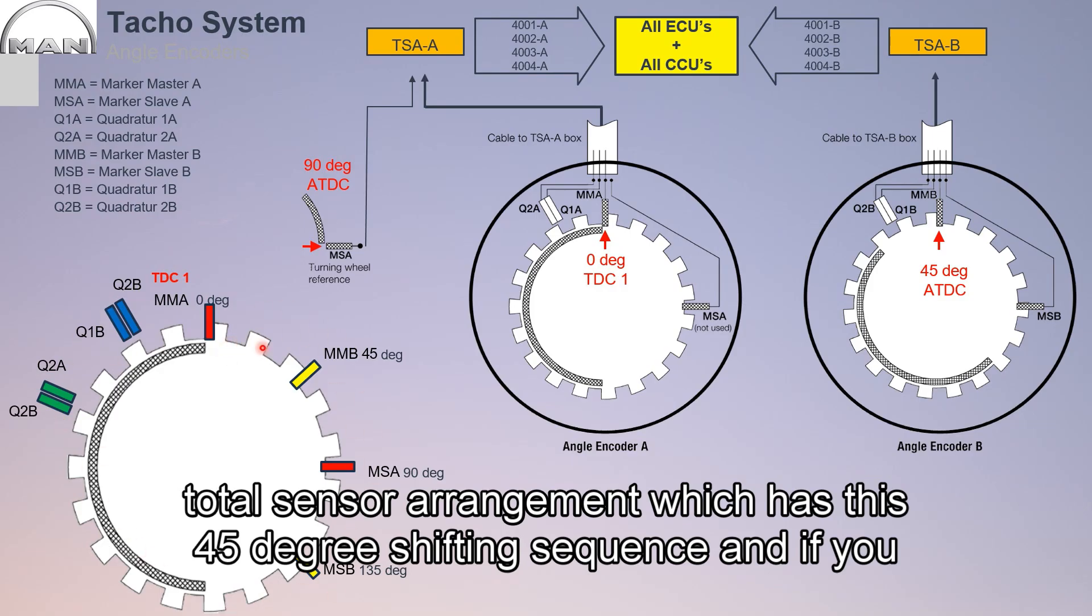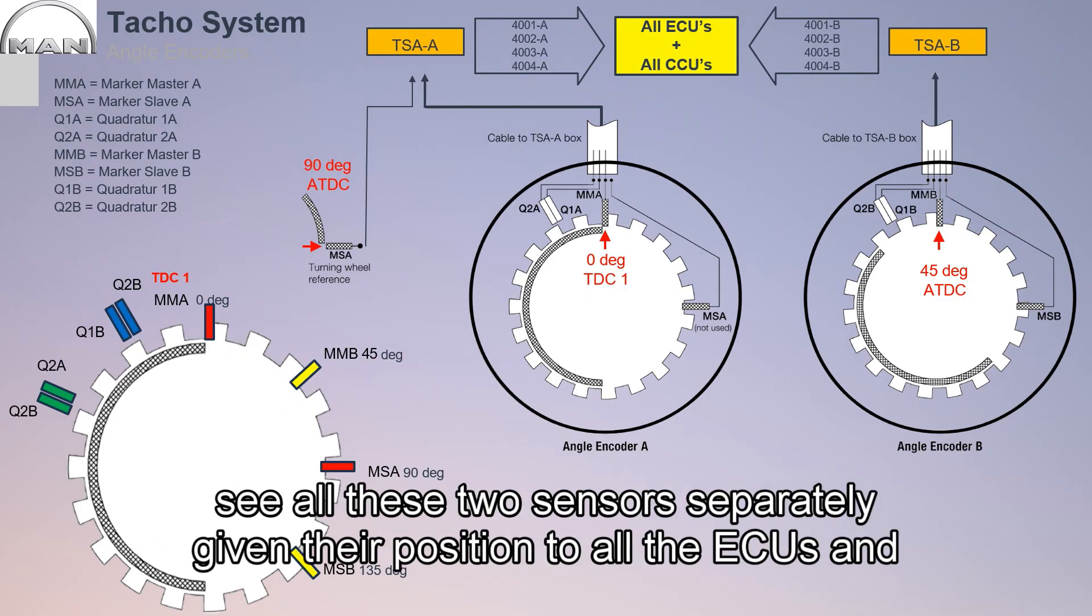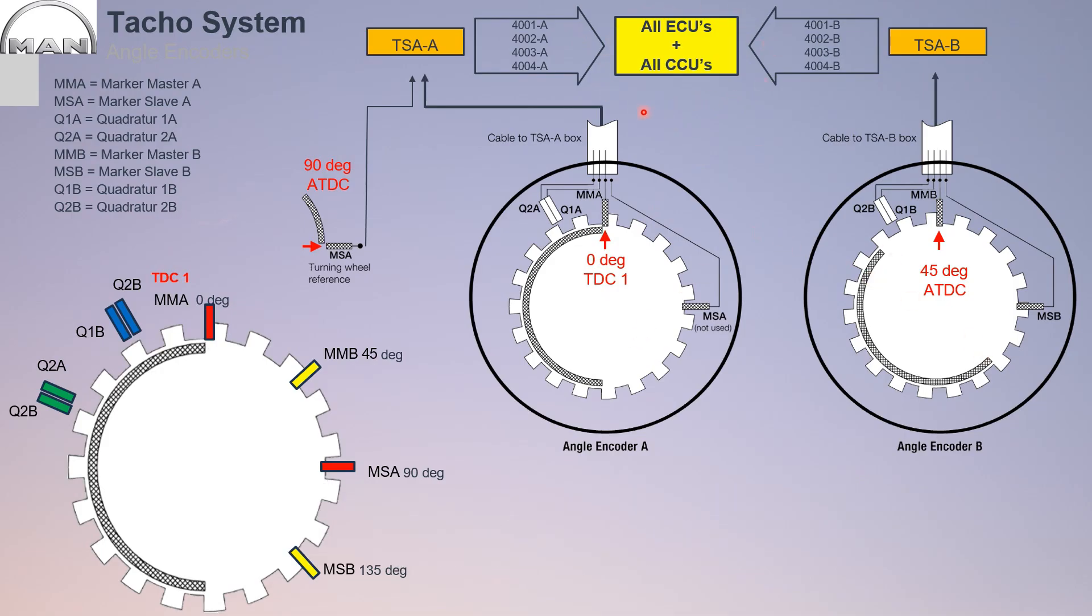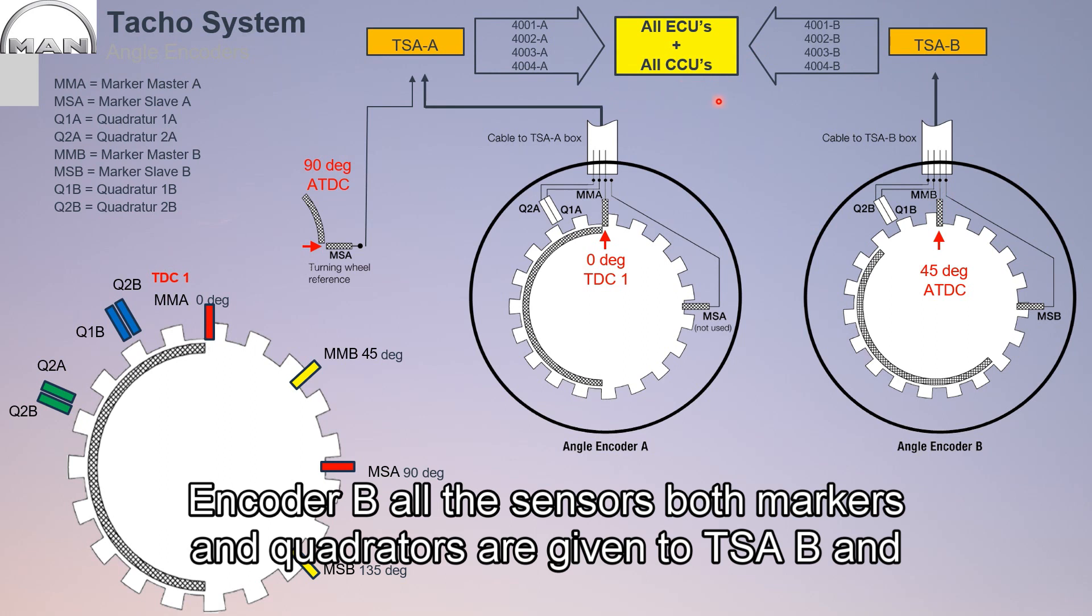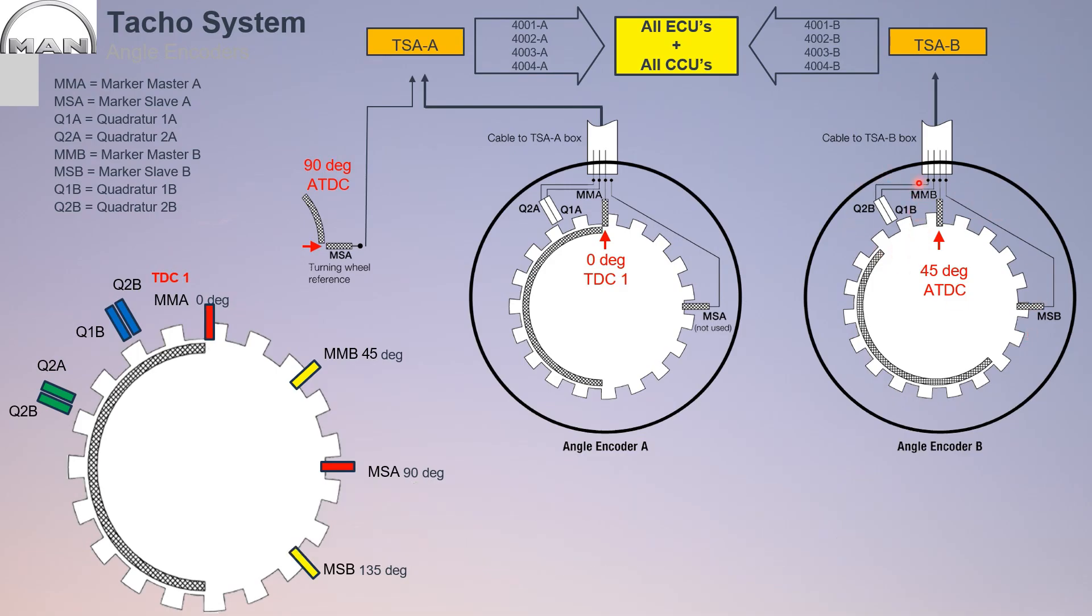If you see all these two sensors separately, given their position to all ECUs and CCUs, encoder B, all the sensors, both markers and quadratures, are given to PSA B and then to the ECUs and CCUs.